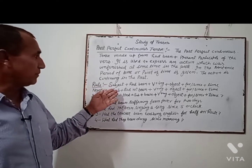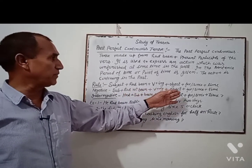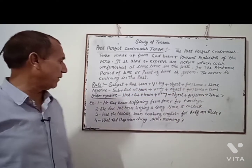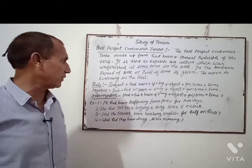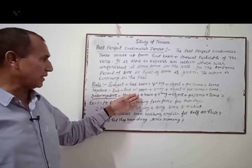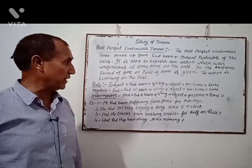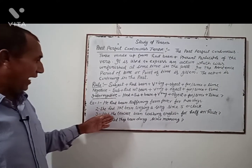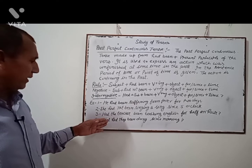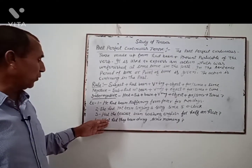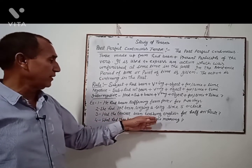For negative: subject plus had not been plus V-ing plus object plus for or since plus time. For example: She had not been singing a song since 5 o'clock. For interrogative: Had the teacher been teaching English for half an hour? For double interrogative, an interrogative pronoun is put before the rule. For example: What had they been doing since morning?